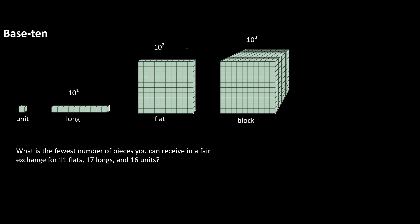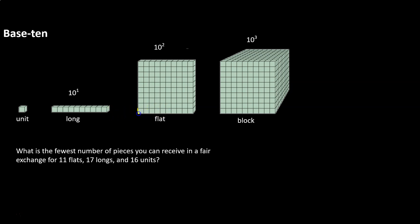We have a few different blocks to look at. We have something called a unit — that's a single cube to represent singles, kind of like how $1 bills work in our monetary system. Then we have a long. Notice that the long is made up of 10 units stacked side by side, kind of like how a $10 bill works. Then we have a flat. A flat is made up of longs — we need 10 longs to make a flat, similar to how we could use 10 ten-dollar bills to make a $100 bill.